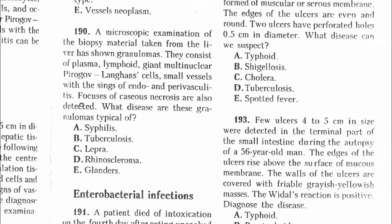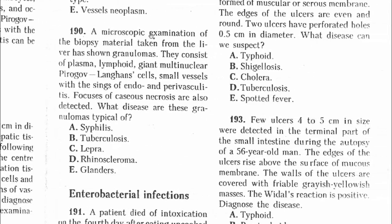Question 190: Microscopic examination of biopsy material from the liver showed granulomas consisting of plasma cells, lymphoid cells, giant cells, and small vessels with signs of vasculitis. This is syphilis, just like the previous question. The answer is A.